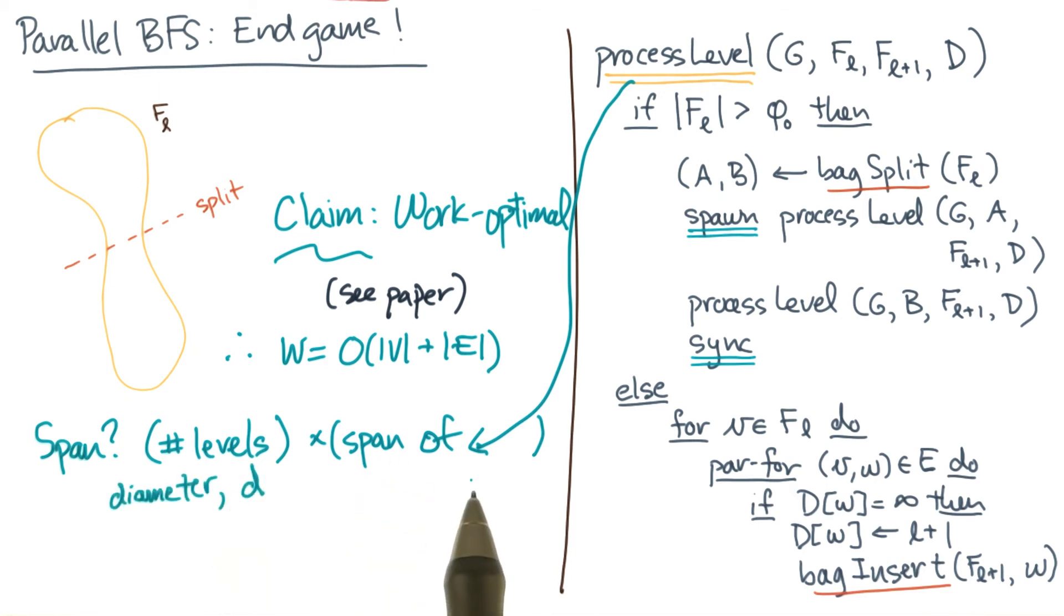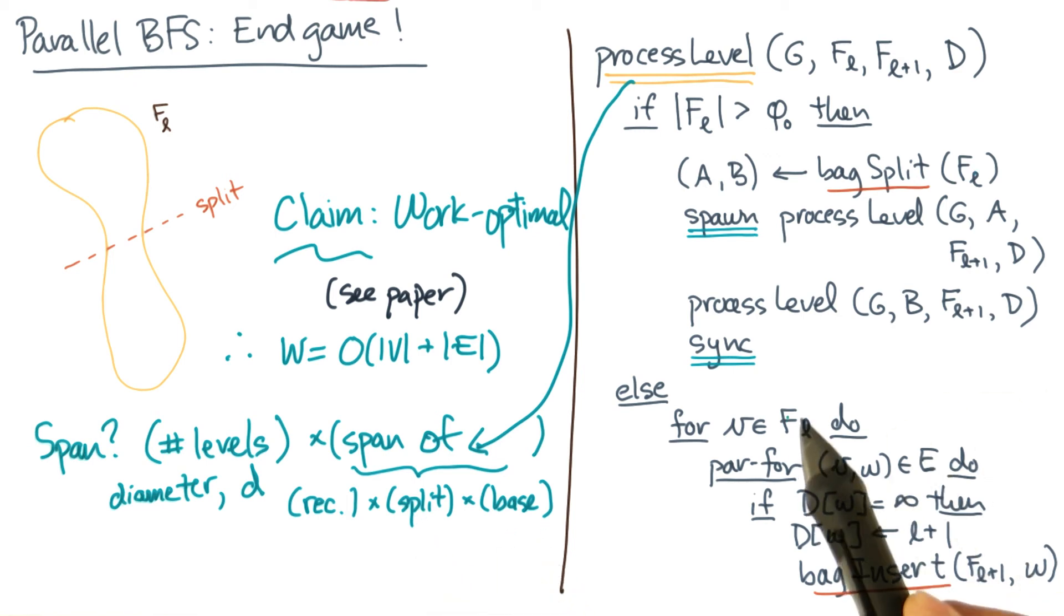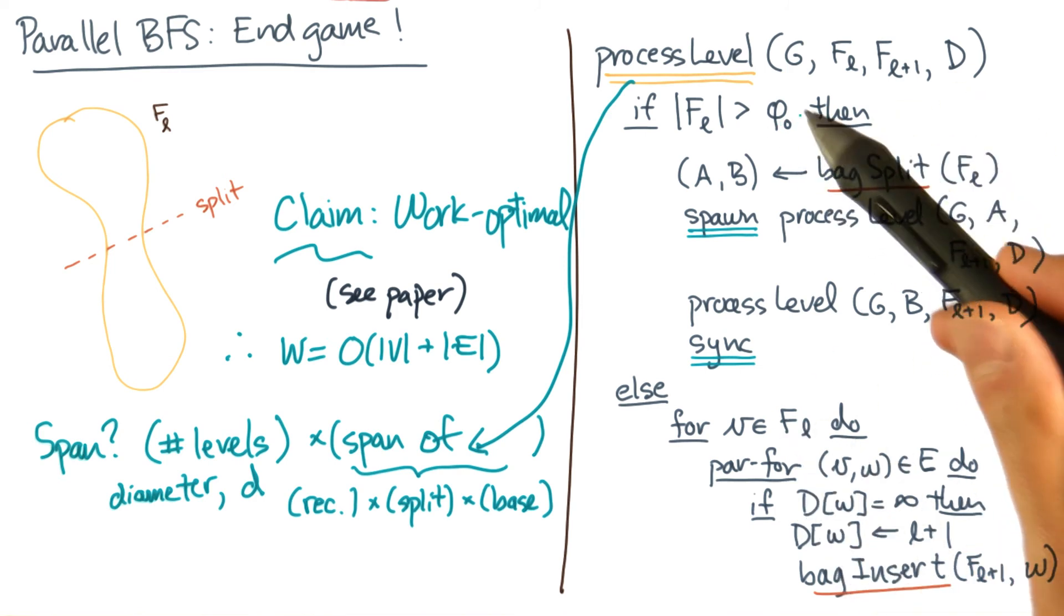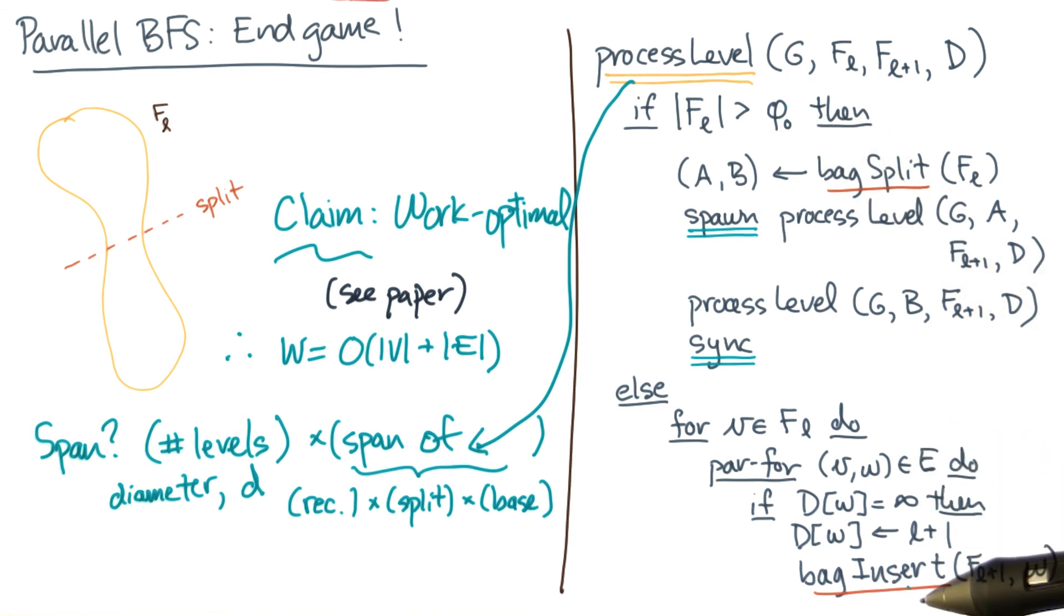The first factor is bounded by the diameter of the graph, little d. The span of process level has three parts. There's the depth of the recursion, the cost of splitting, and the cost of the base case. The recursion will be logarithmic in the size of fl. Since fl can only be the total number of vertices in the worst case, the depth of the recursion should be log n. The splitting we argued was log n. In the base case, the size of fl is a constant because we have a constant cutoff built in. Therefore, we can bound this by a constant.